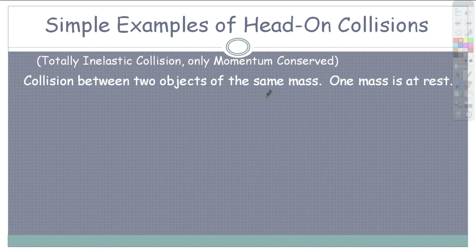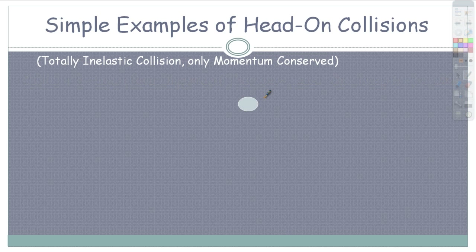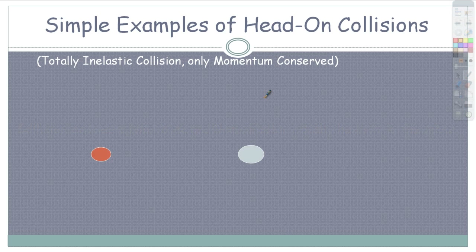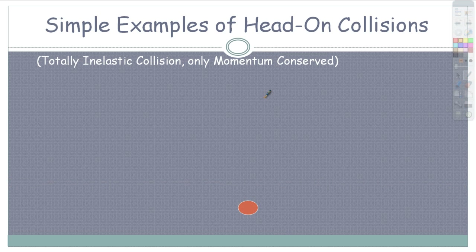Now I'm going to show you inelastic collisions — only momentum is conserved, and it means they stick together. Same mass, one at rest: they both go off together. Since they have the same mass, they're going to have double the mass after they stick, so the velocity they travel with is going to be half of the original. When the one at rest has twice the mass, the combined velocity will be a lot slower than half. When the moving object is bigger, there's going to be a pretty big velocity still after they smack into each other.